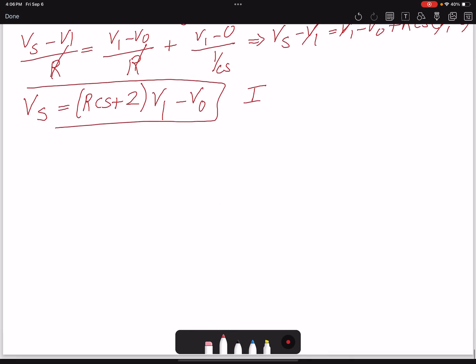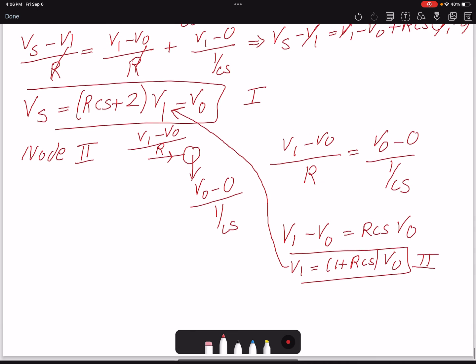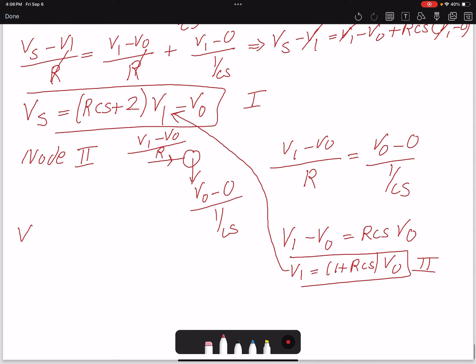Therefore, Vs would be (RCs + 2) times (1 + RCs)V0 minus V0. Let me separate this from the crowd.